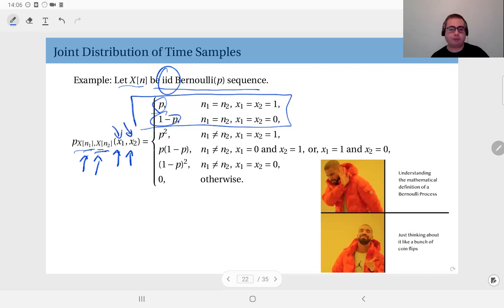You are observing the same time instance, and I'm asking you the probability that one of the outcomes is 0, but the other outcome is 1. That is impossible because it's the same time instance. So for instance, when n1 is equal to n2, but x1 is not equal to x2, then the probability is 0, which is in fact covered in this case. That is for n1 equals n2.